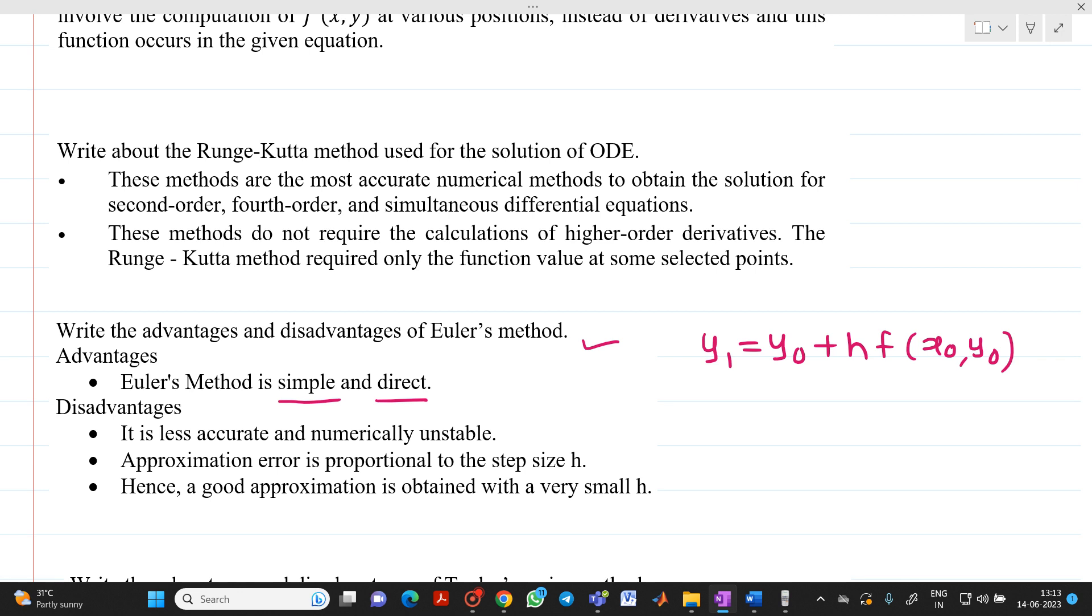there are few disadvantages also to Euler's method. Every coin has two sides. The disadvantage is it is less accurate and numerically unstable. When will it be less accurate? When the value of h is more, then accuracy will be less. We can say that more the value of h, lesser will be the accuracy of this method.